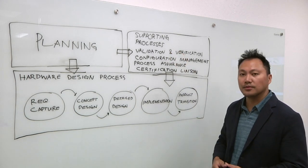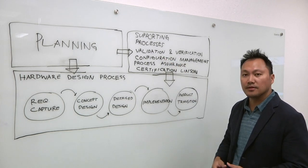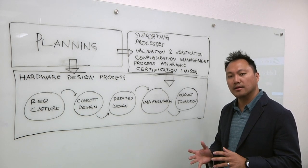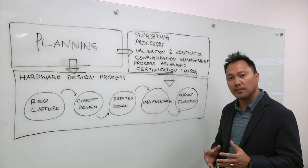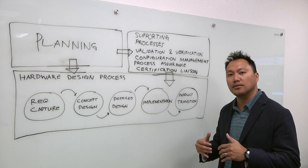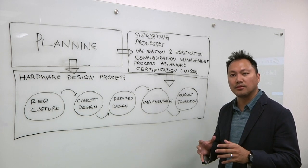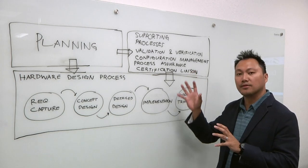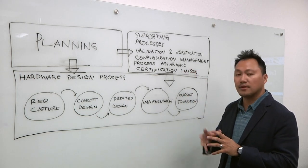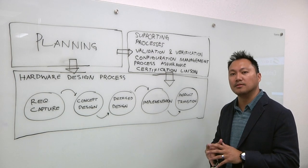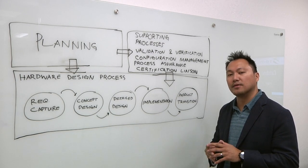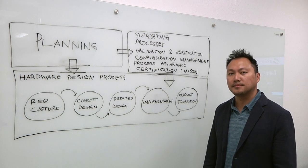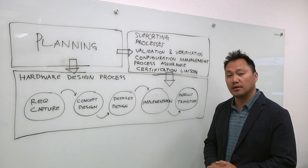The supporting processes for DO254 include validation and verification, which is basically ensuring that your detailed design and final product meet the requirements you defined. You have to formulate your verification plan and test cases based on the requirements, and then develop your test bench based on those test cases. The most difficult part is that validation and verification needs to be a requirements-based approach — all activities in V&V need to be requirements-based. And in a safety-critical market, these things have to last 10, 20 years or more.